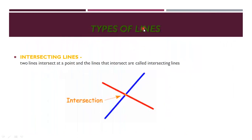Next is types of lines. Intersecting lines: two lines that intersect at a point are called intersecting lines. Where two lines meet, that meeting point is the intersection. You can see here the blue line and red line — these two lines meet in the middle at a point, which is the intersection.